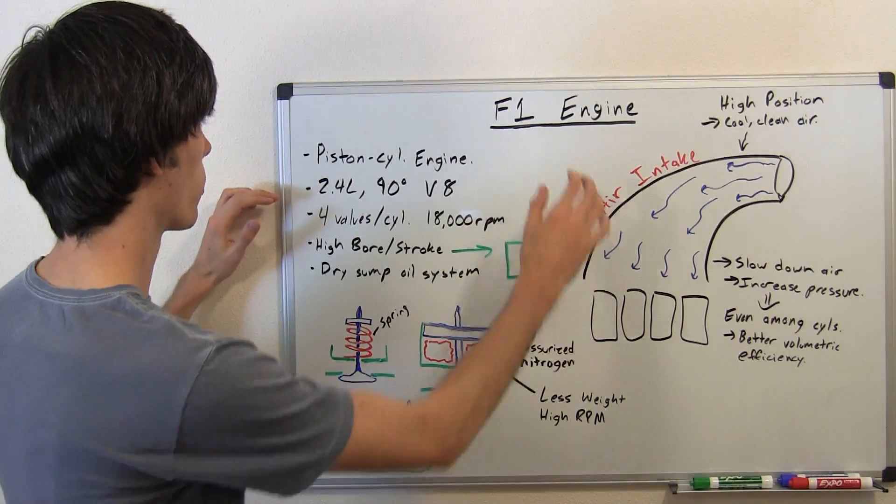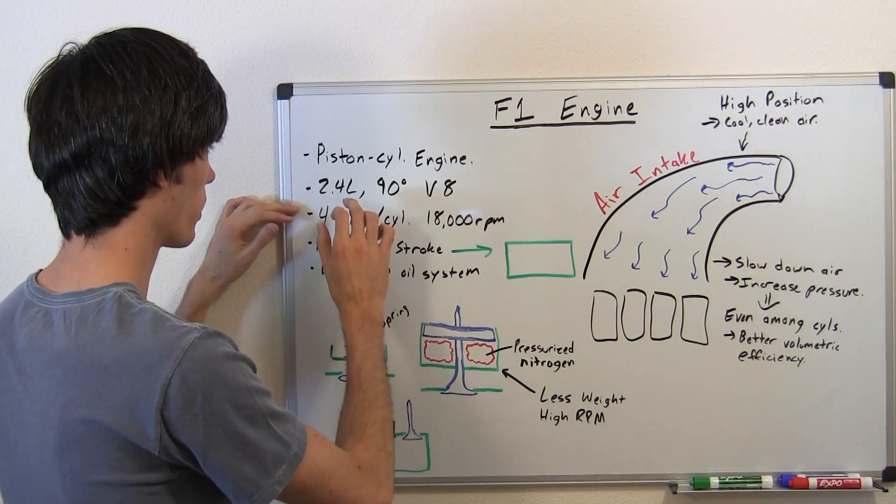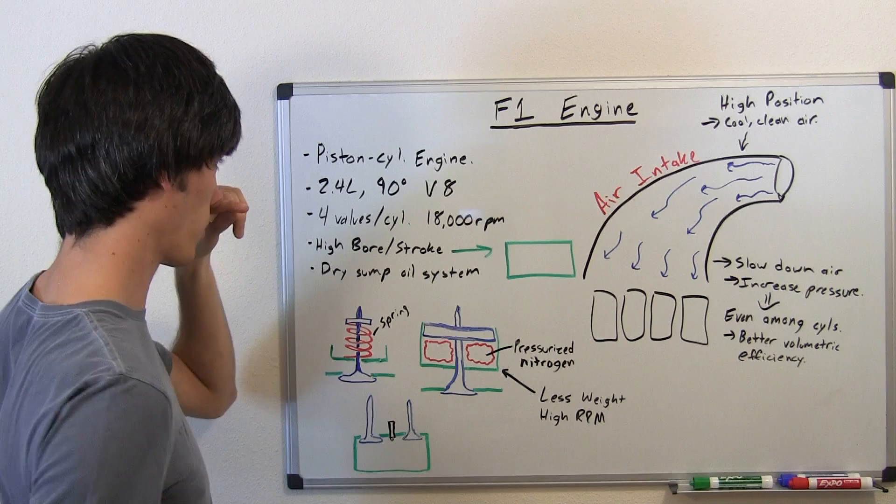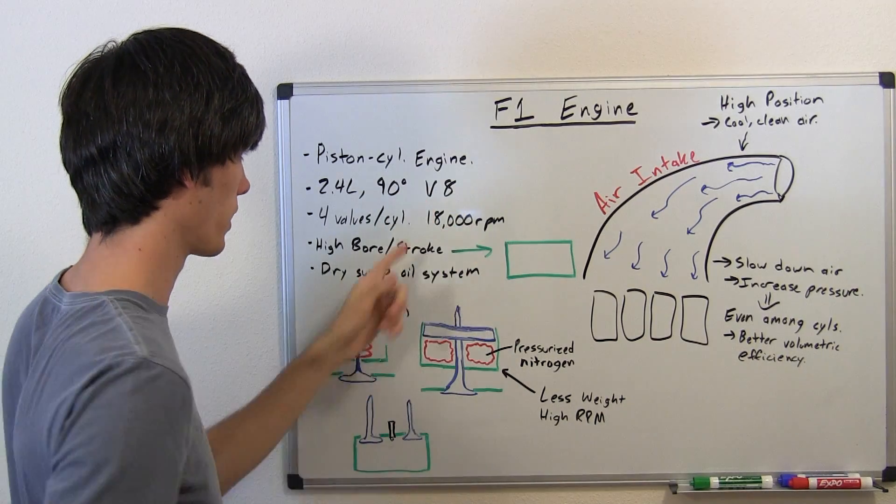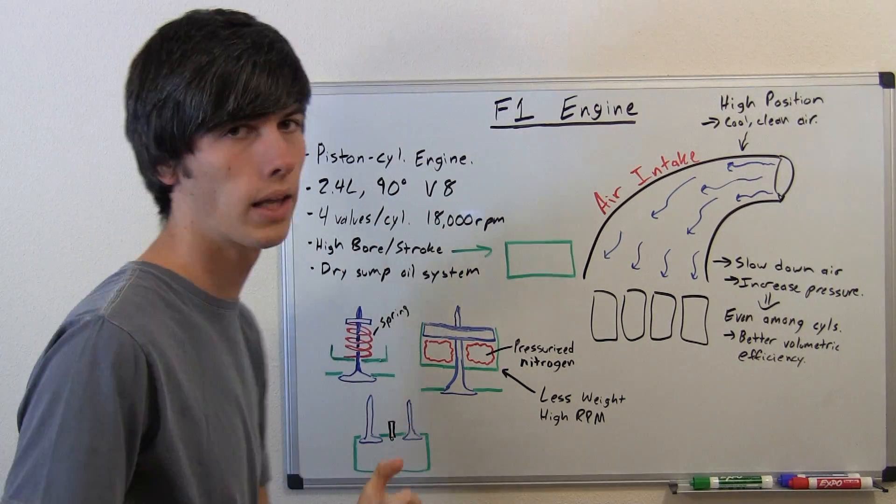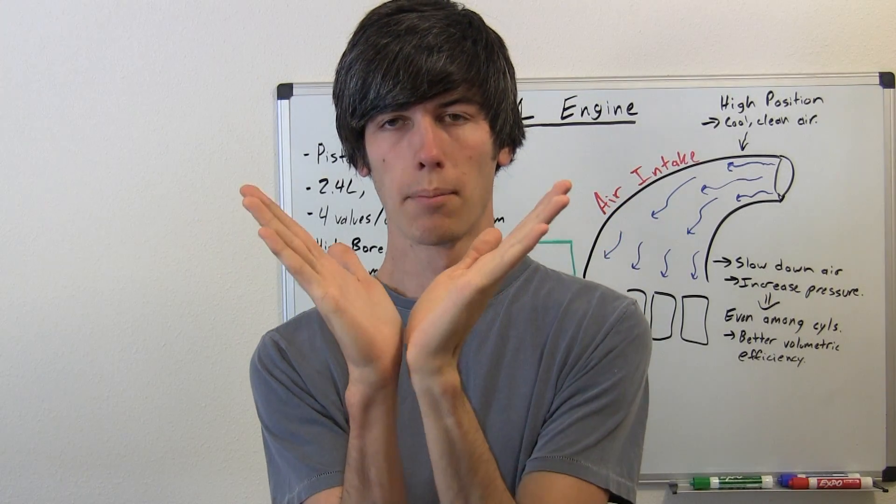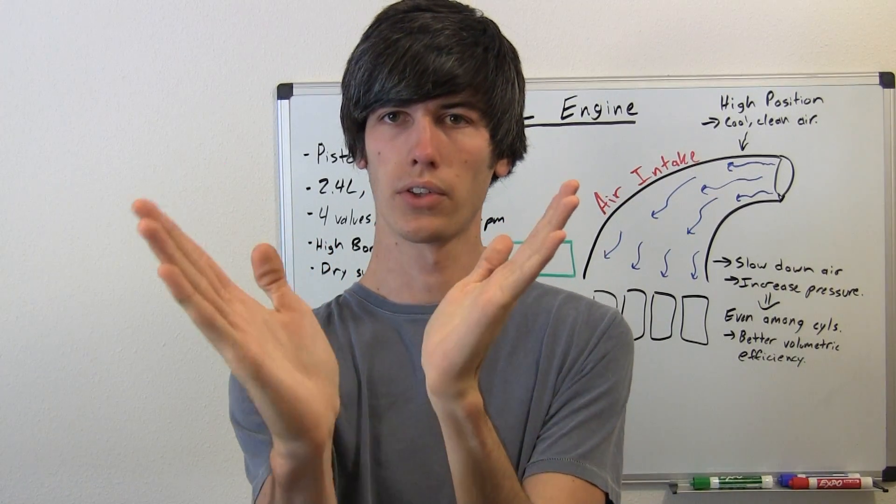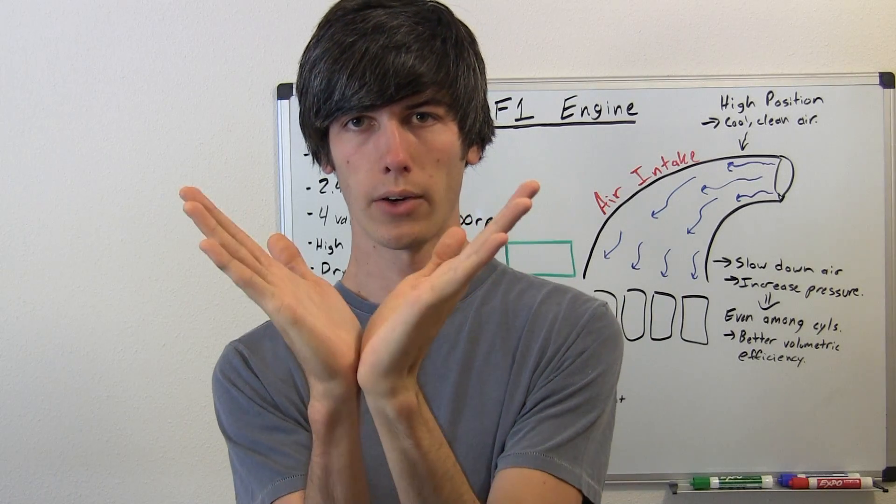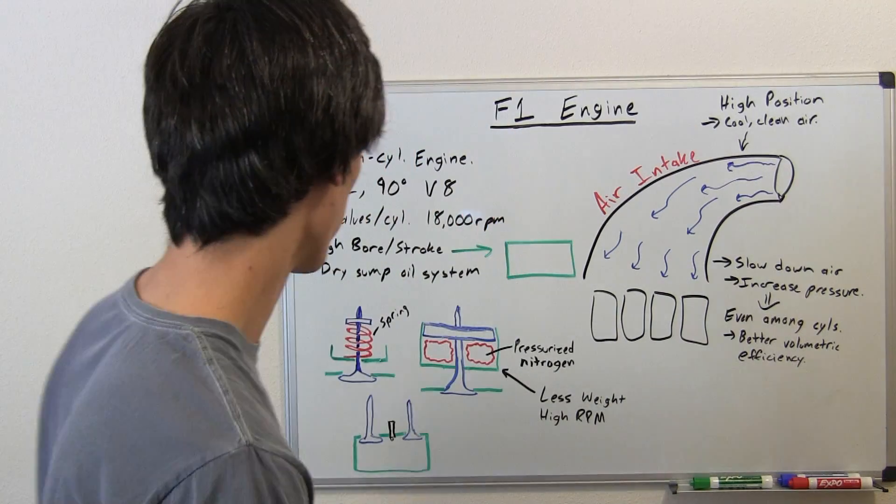So Formula One engine, what do we got going on? Well it is restricted to 2.4 liters and a 90 degree V8 configuration. So what that means is you've got two cylinder banks of four cylinders perpendicular to each other. So you've got four cylinders here, four cylinders here, and they're at a 90 degree angle. That's the layout of the engine.